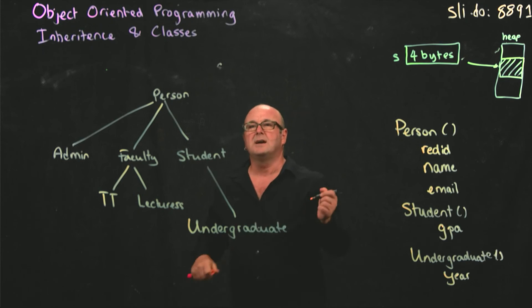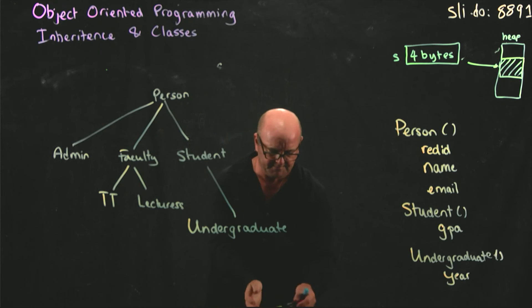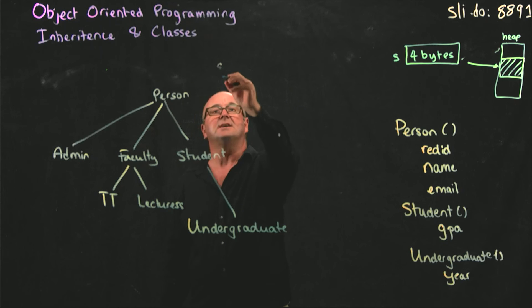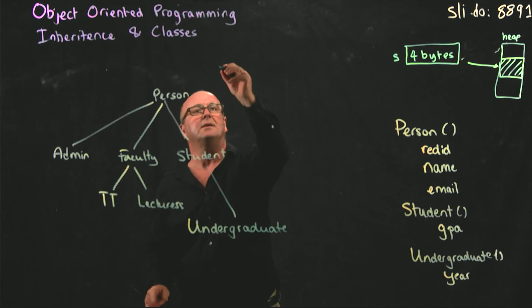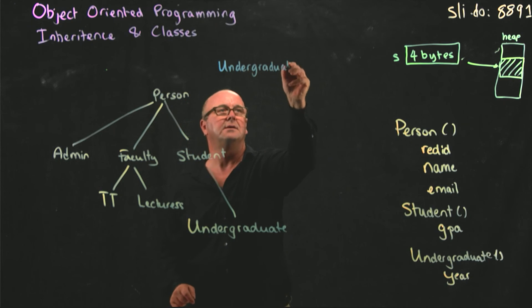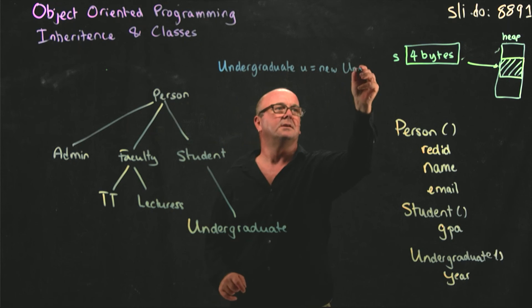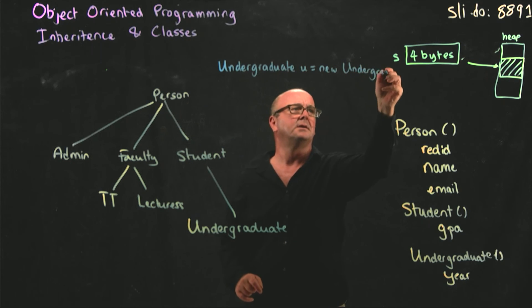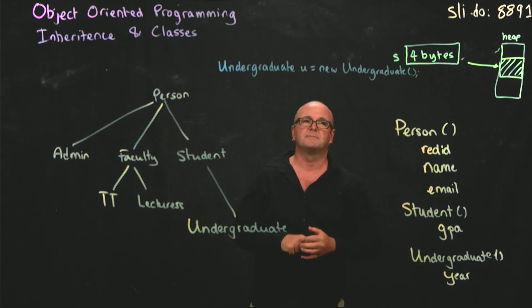The other thing that we can do is we can cast variables. And so we can, for example, change colors here. We can instantiate a variable by saying, as we've seen, by saying undergraduate u is new undergraduate.